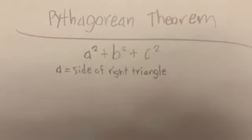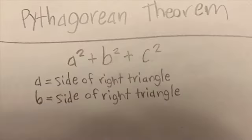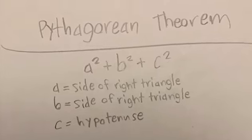A equals side of right triangle. B equals side of right triangle. C equals hypotenuse.